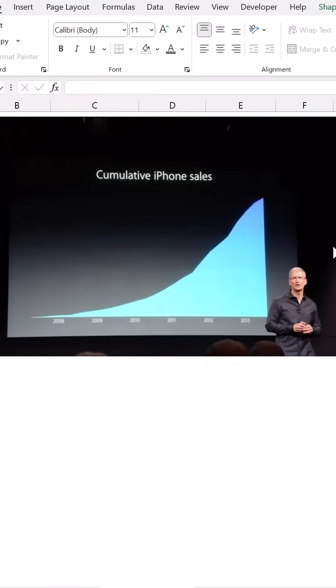The second way to mislead is using cumulative graphs. Take a look at this famous graph that Apple presented in 2013. It certainly looks impressive, showing monumental growth in sales. But this is lying to you.